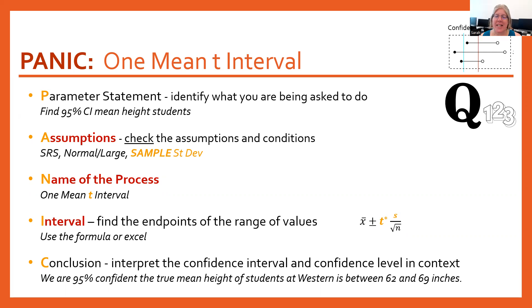The A step covers assumptions and conditions, and two of them stay the same. The random sample condition is still there and the normal/large condition is still there, but instead of using the population standard deviation sigma, you're going to use the sample standard deviation s.